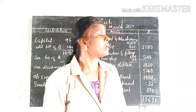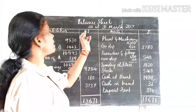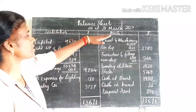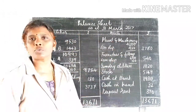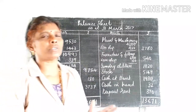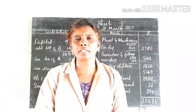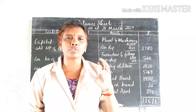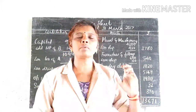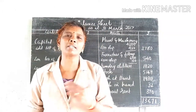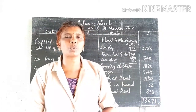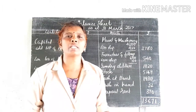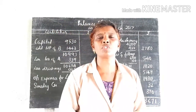Then the balance sheet as at 31st March 2017. This is the final accounts of a sole trader. The adjustments to consider are outstanding expenses, prepaid expenses and depreciation.